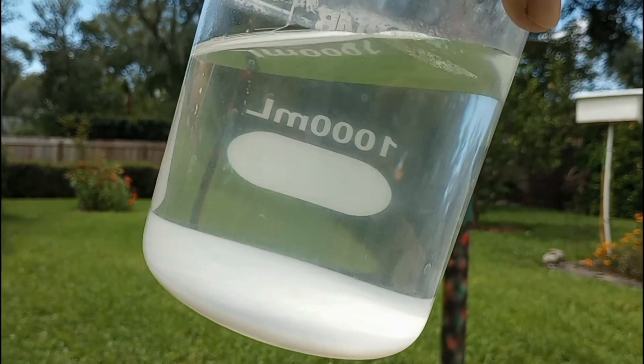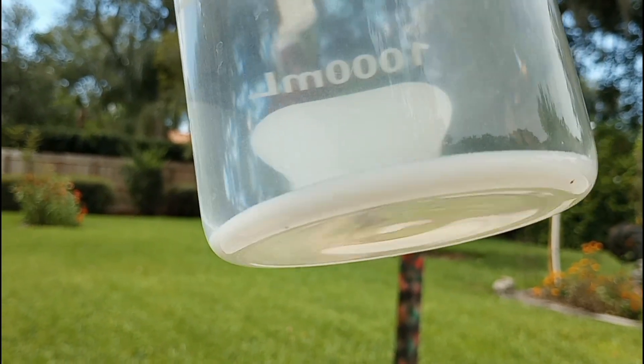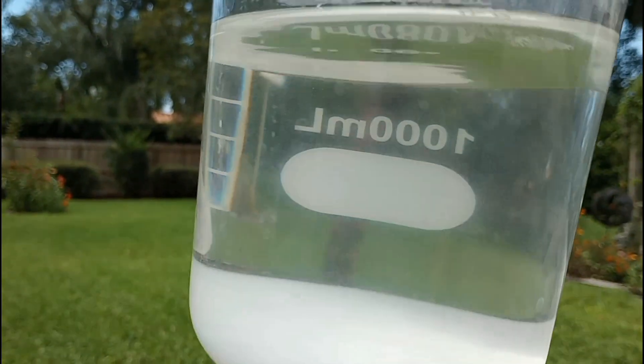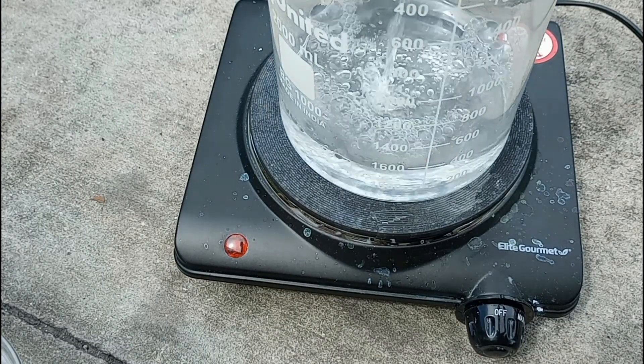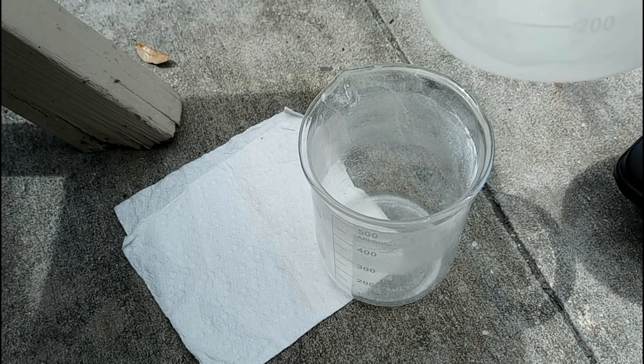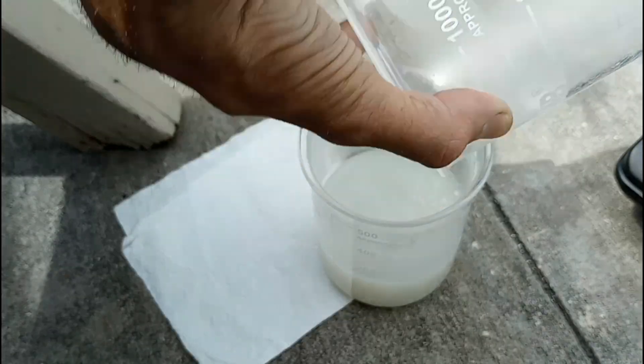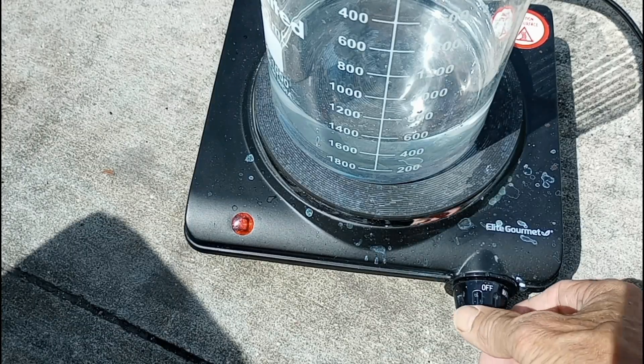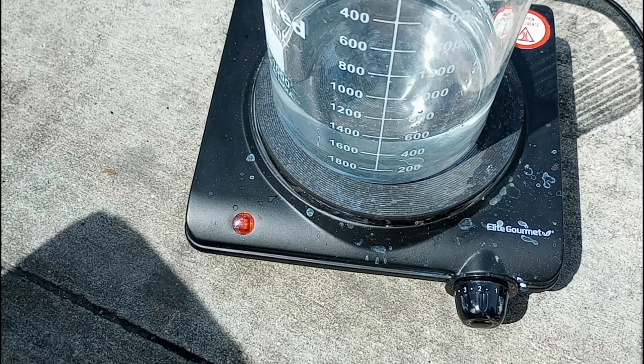It took about two hours to get what we suspected to be zinc oxide to settle to the bottom and leave us with a clear solution. Then we decanted off the suspected zinc acetate solution into the beaker on the super scientific hot plate. The zinc oxide was washed many times, and then we started reducing the zinc acetate.